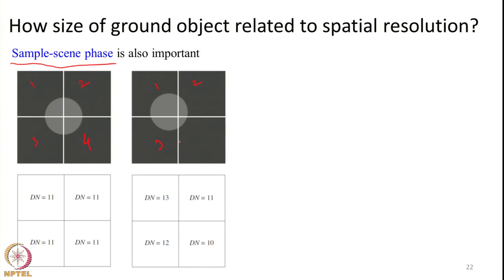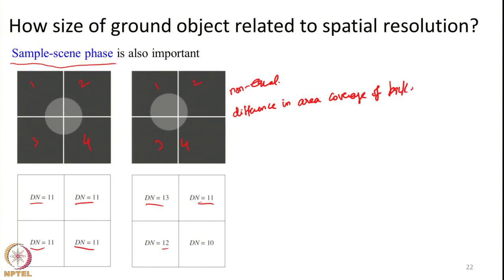Whereas here the same object is distributed in a non-equal fashion among the 4 GIFOVs. The DN values finally produced will be different because of the change in area coverage of background and object of interest. The object has a larger area coverage in one pixel, very low coverage in pixel number 4, and limited coverage in pixel number 2.